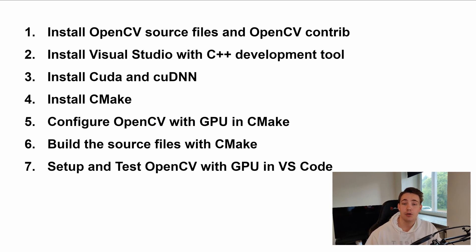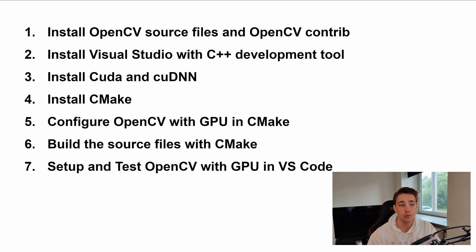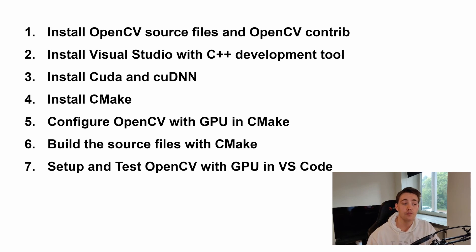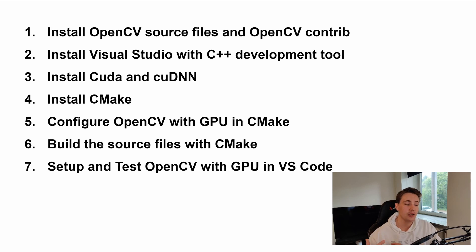Let's go over the steps we're going to cover in this video. I'll have timestamps under the video so you can skip through them if you already have CMake or CUDA installed. First, we need to install OpenCV source files from GitHub, along with the OpenCV contrib directory. Then we'll install Visual Studio, making sure to include the C++ development tools, which we need to build the OpenCV source files with GPU support. Then we're going to install CUDA and cuDNN from NVIDIA's website.